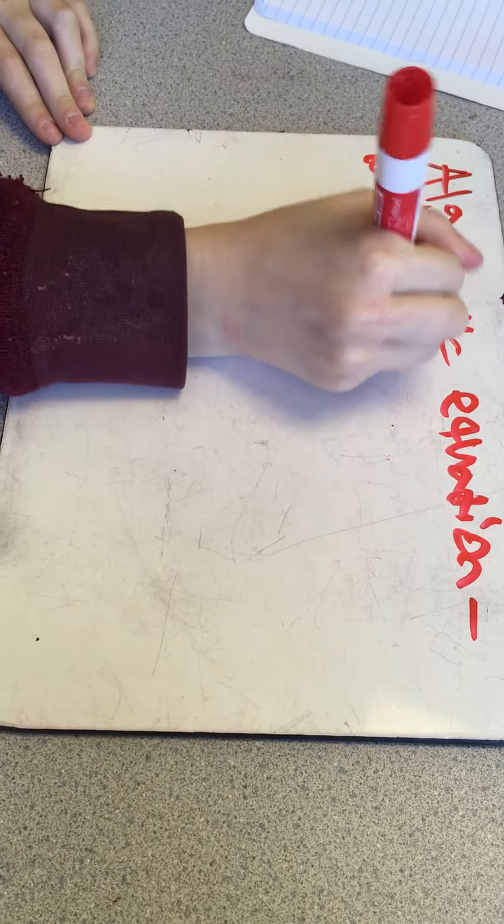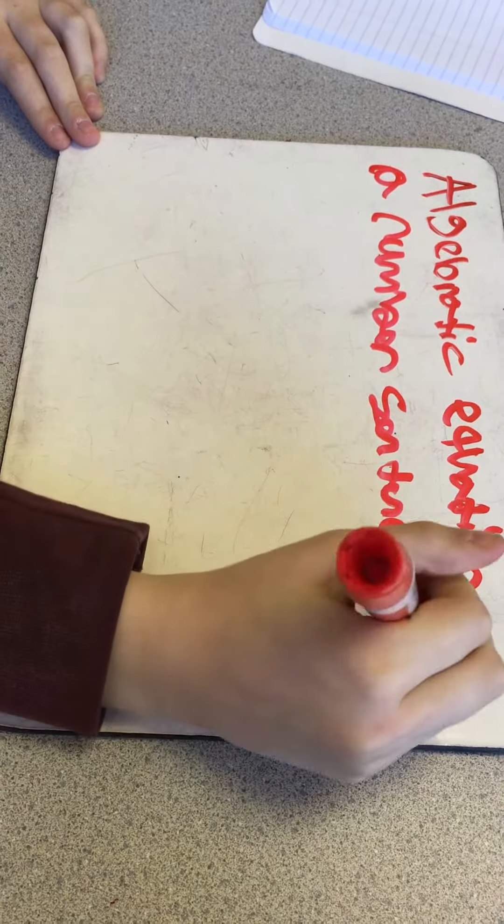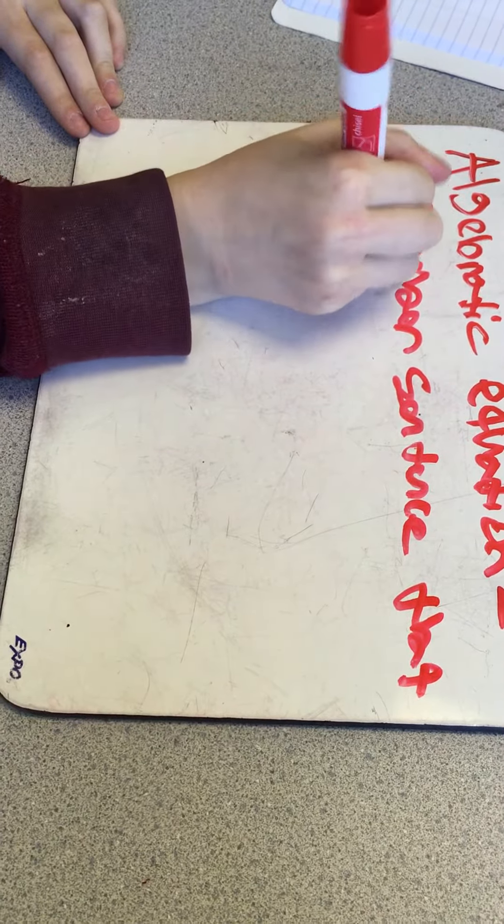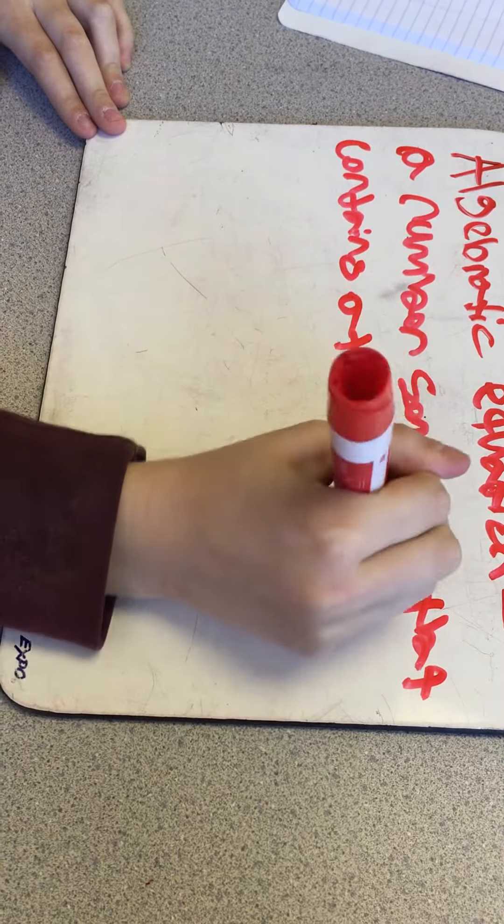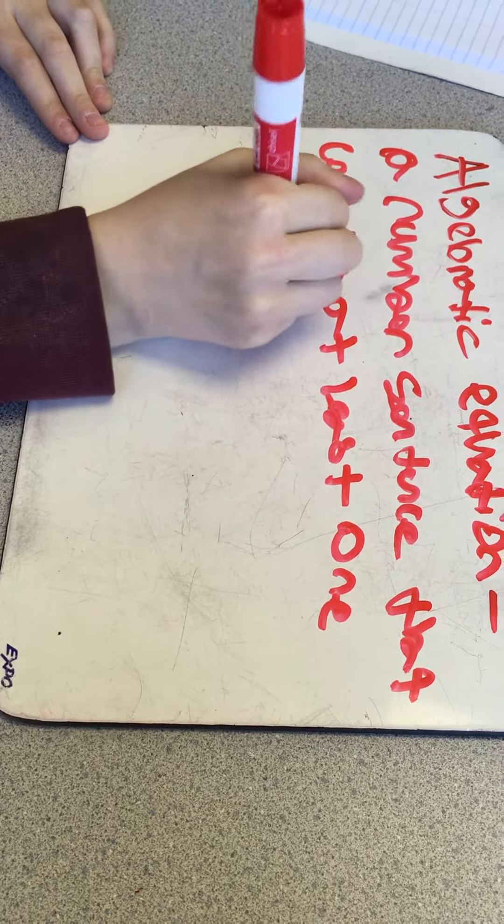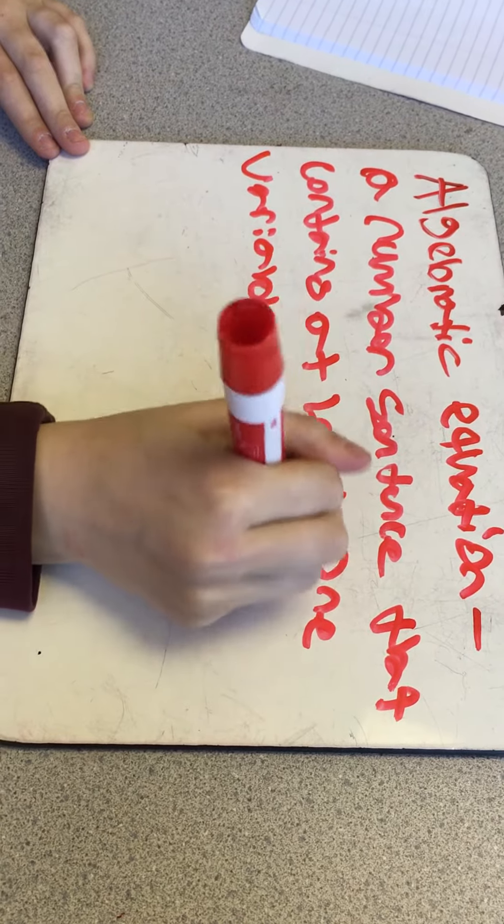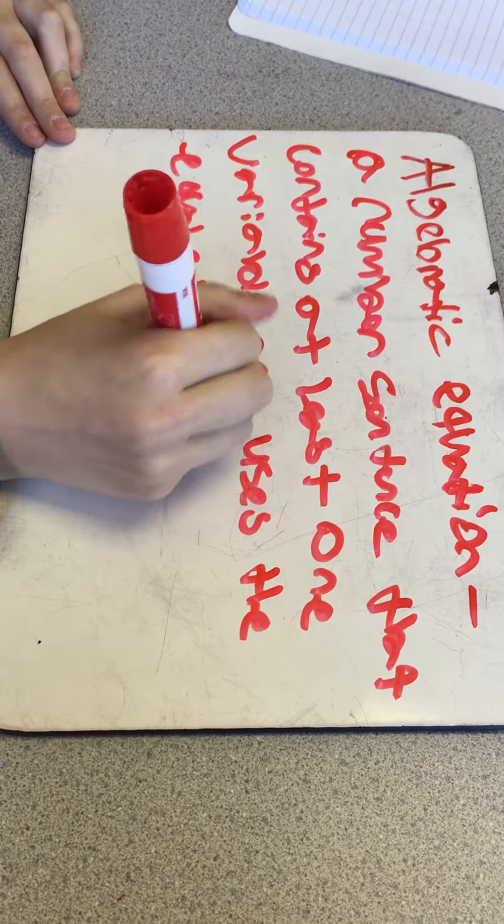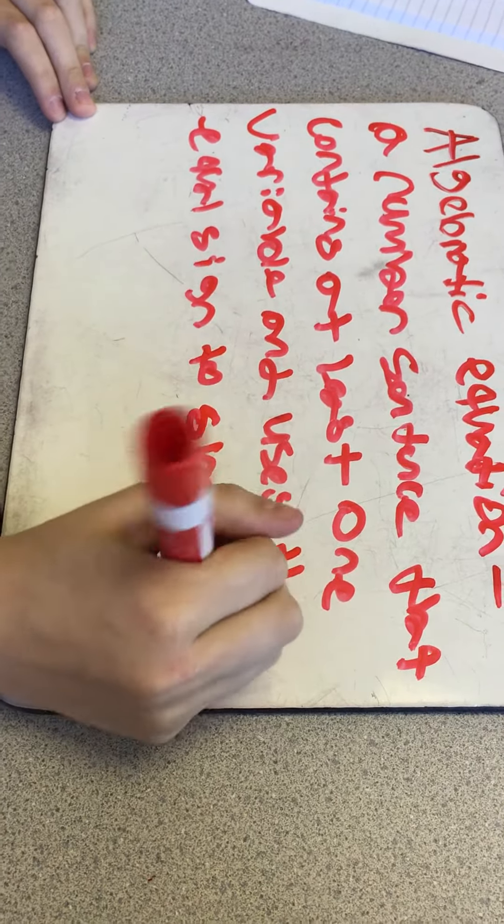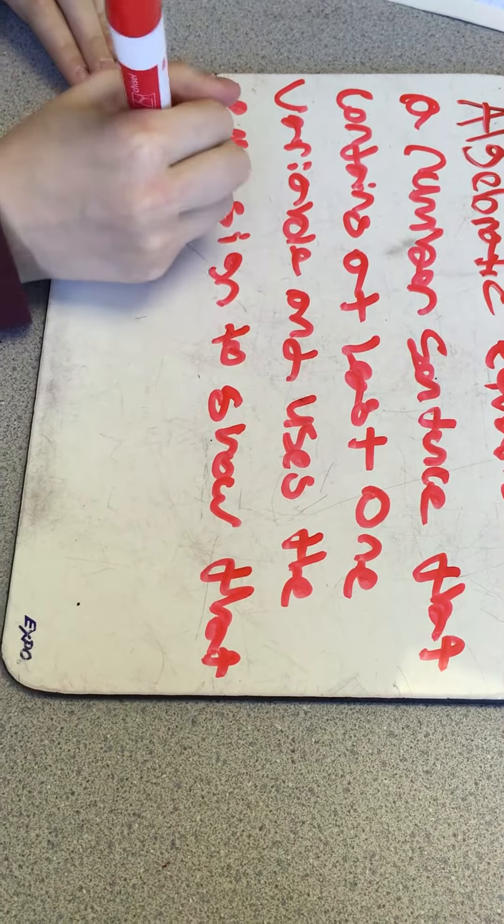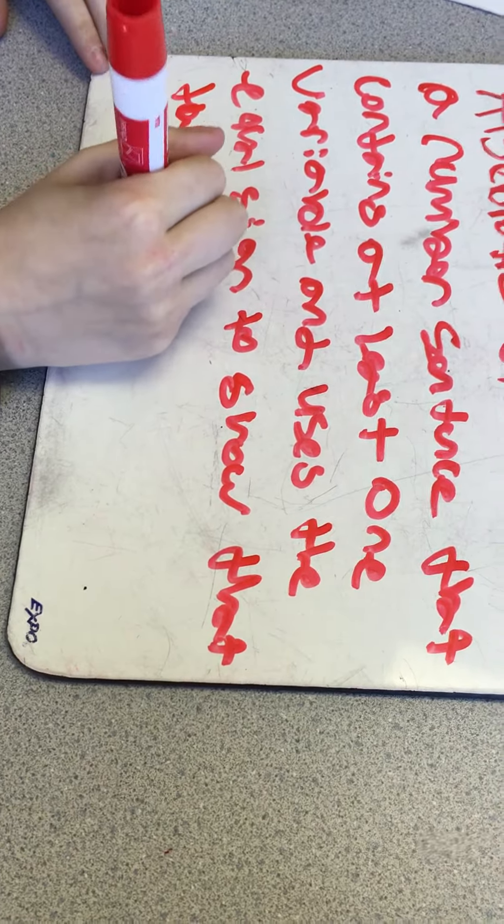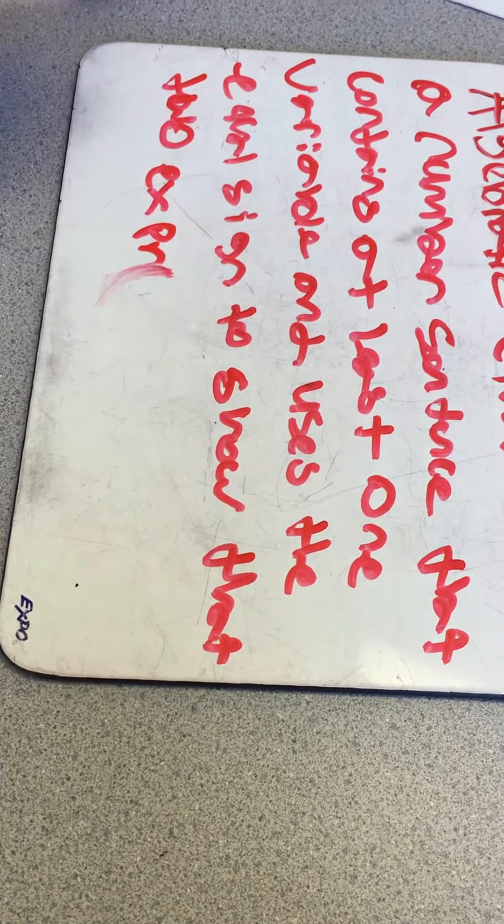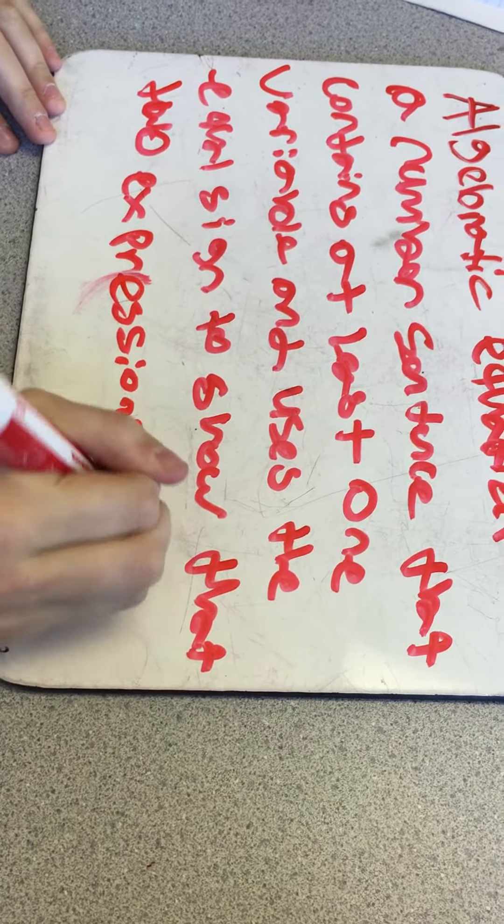Before we solve an algebraic equation, we've got to know what an algebraic equation is. An algebraic equation is a number sentence that contains at least one variable, which we'll talk about variables later in this video, and uses the equal sign to show that two expressions are equivalent.